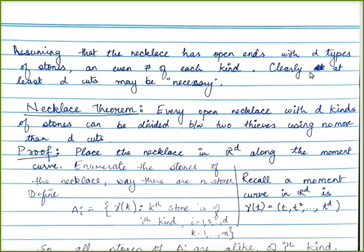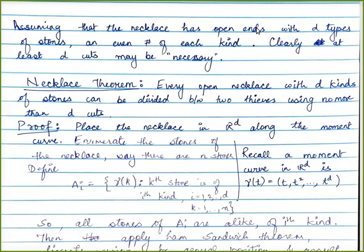You take the necklace, count the first type of precious gem from 1 up to N, and make a cut at the position when N/2 gems have been passed. Then the second cut occurs when half of the second type of gem has been counted, and so on. For D types of gems, D cuts appear necessary. But what the Necklace Theorem tells us is that this is the worst case. Every open necklace with D kinds of stones can be divided between two people using no more than D cuts.